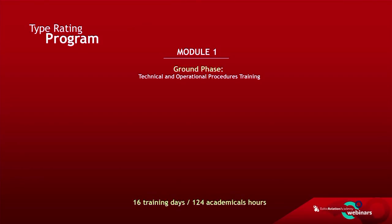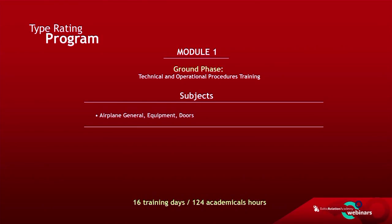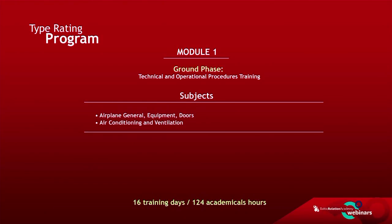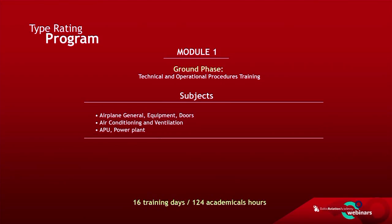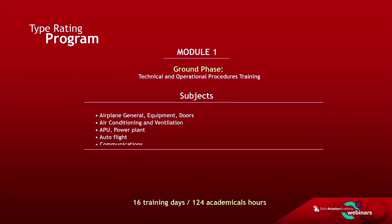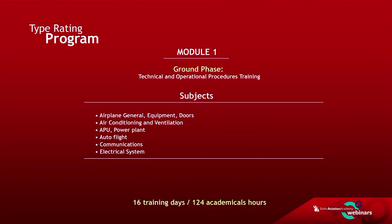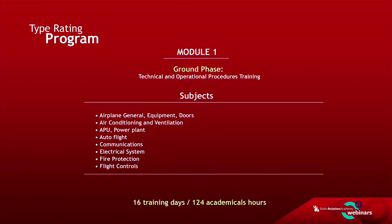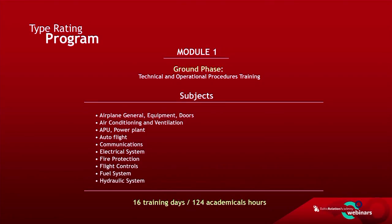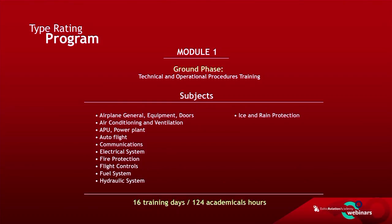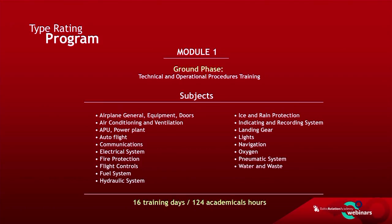During the ground training, you will study subjects such as: airplane general, equipment and doors, air conditioning and ventilation, APU and power plant, auto flight, communications, electrical system, fire protection, flight controls, fuel system, hydraulic system, ice and rain protection, indicating and recording systems, landing gear, lights, navigation, oxygen, pneumatic system, water and waste, and maintenance systems.